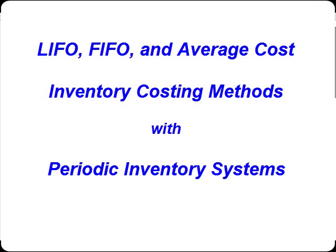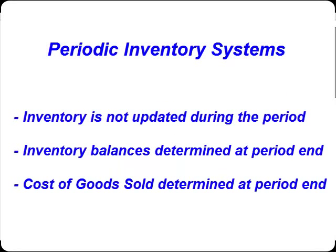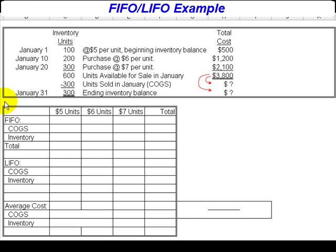In a periodic inventory system, the company doesn't worry about determining cost of goods sold or the cost of the ending inventory until the end of the accounting period. Costs are accumulated during the period, and then at the end of the period, we determine how much of the cost belongs in cost of goods sold and how much belongs in the ending inventory balance.